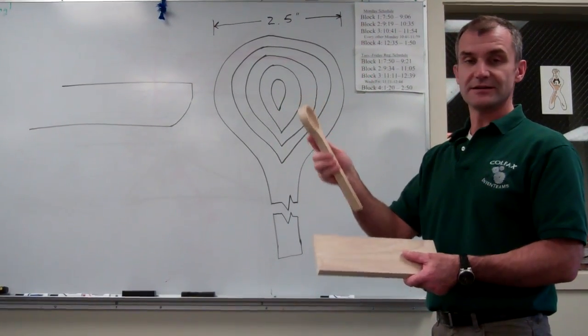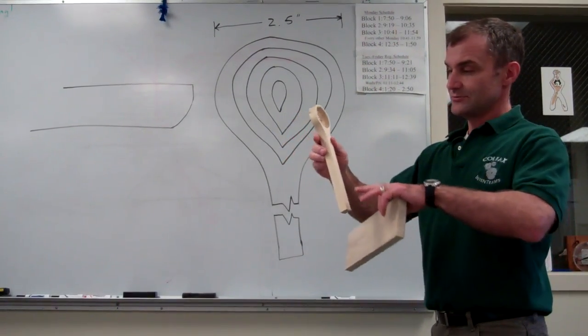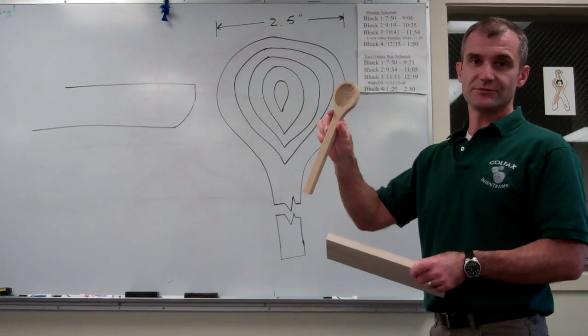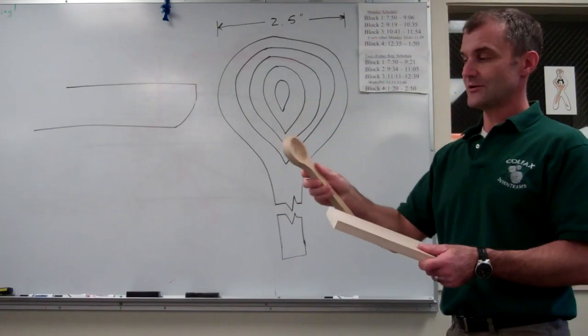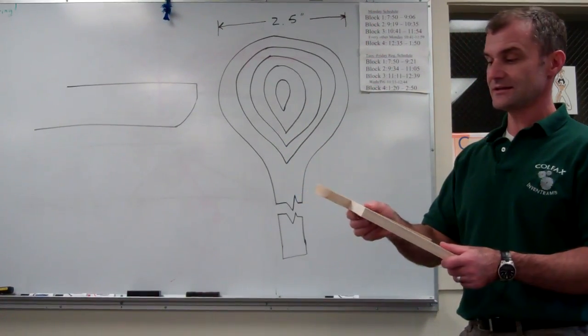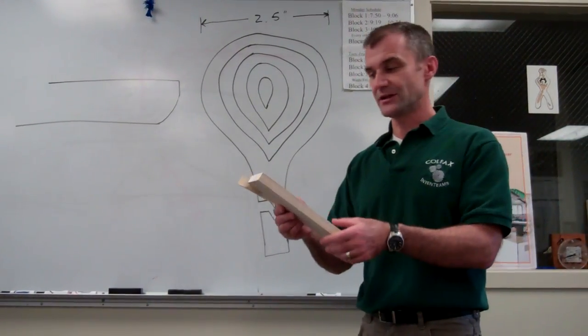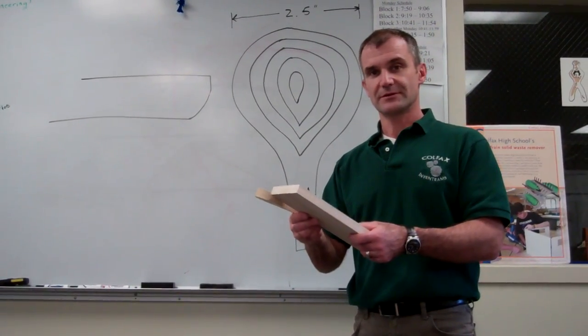And then step five, router and finish the whole spoon. And if that order of operations doesn't go right, the whole spoon will fall apart. All right.